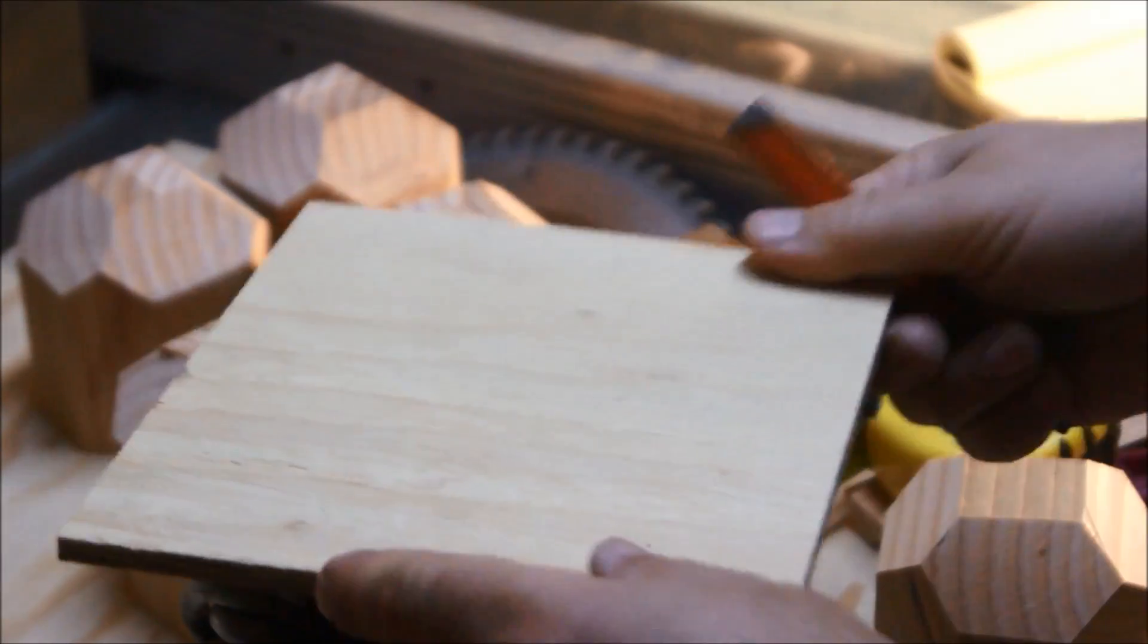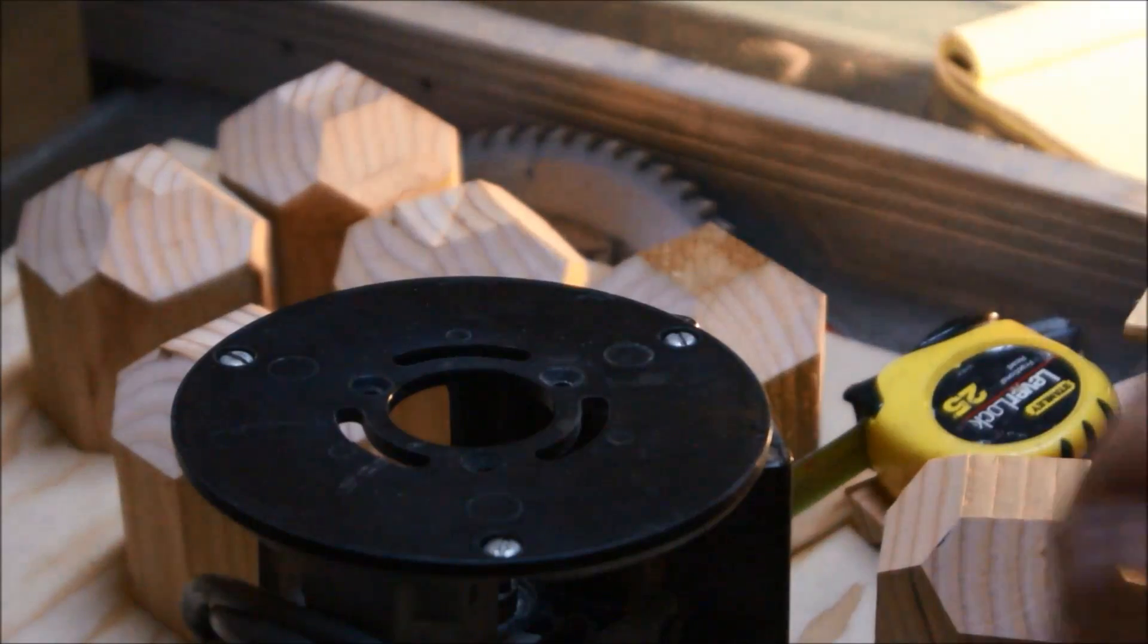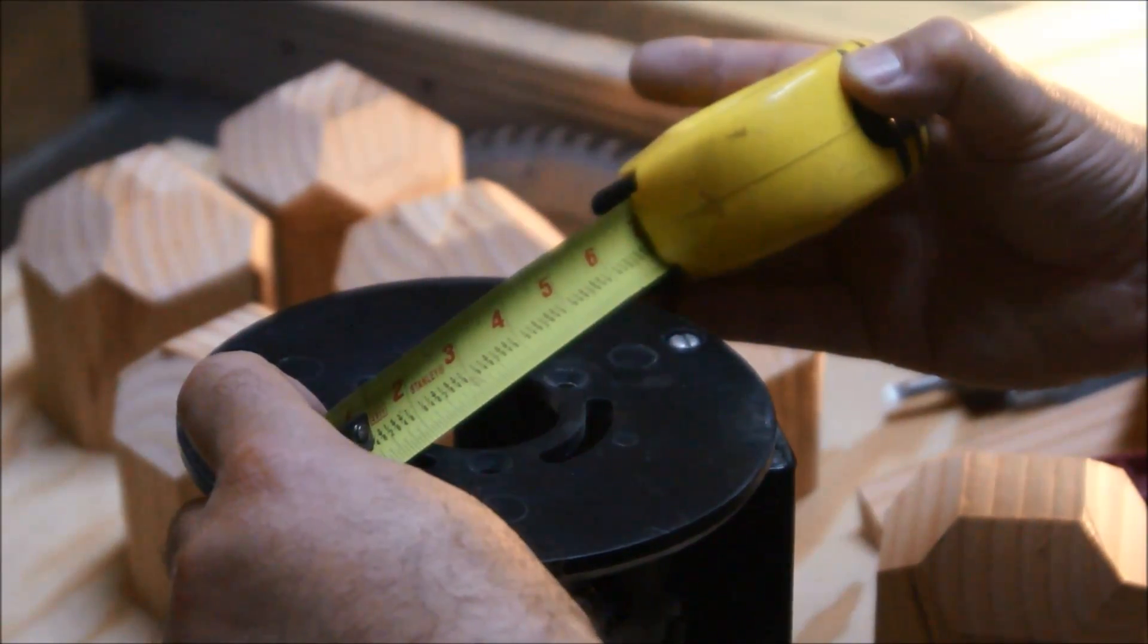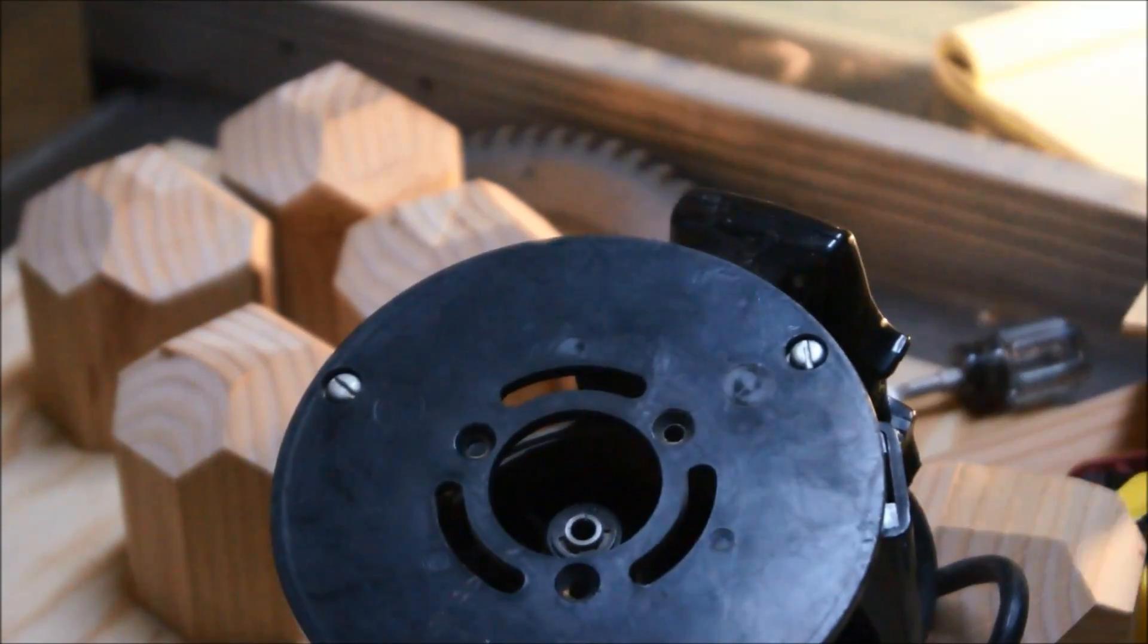In the previous video, we established a theory of a router jig that can be used to make spheres. This time we decided to use a 2 inch hole on the router base and skip the custom base.